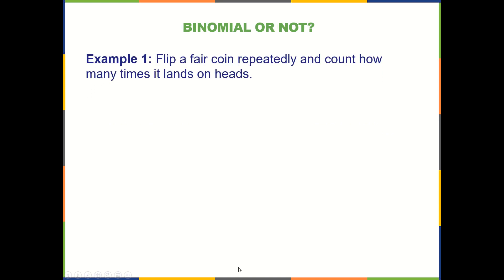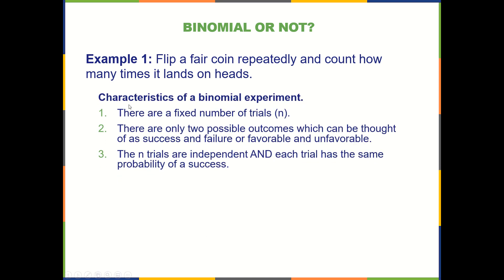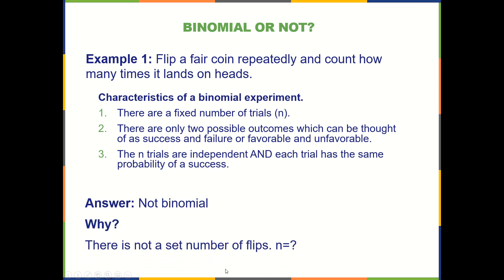Here's an example: flip a fair coin repeatedly and count how many times it lands on heads. Is this binomial? There has to be a fixed number of trials — does it say how many times we're going to flip the coin? No, it's been left vague. We're going to flip it repeatedly but it doesn't say how many repetitions. So right off the bat, it's not binomial because n is not fixed.